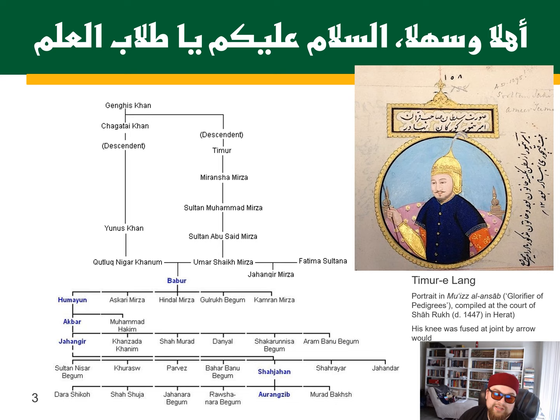Timur — meaning iron — and Lang meaning limp or lame, as we say in English. These are Indo-European languages we're dealing with — Persian and Urdu. Lang is the equivalent to 'lame,' because he walked with a limp, having been hit by an iron arrowhead into the knee.